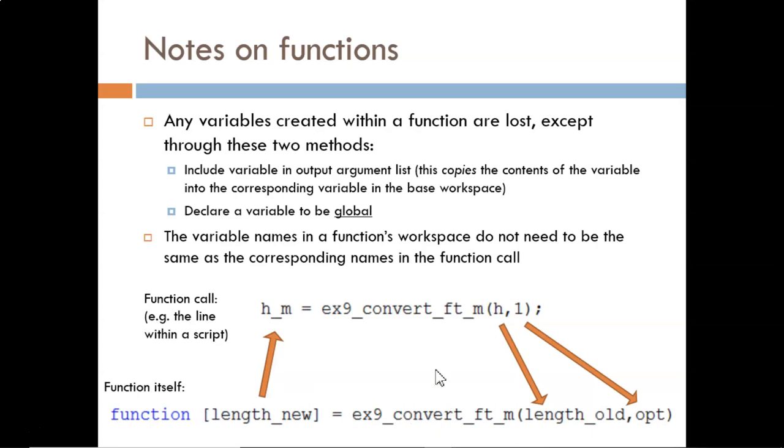In the base workspace, the value stored in h will be copied to the variable named length_old in the function's workspace. The input argument for opt isn't even a variable name. It is a fixed number one.